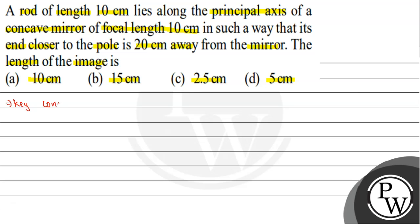The key concept used in this question: first, let's draw a concave mirror. Suppose we have a concave mirror — the outer side is polished. At this point we have the pole P, and along it we draw the principal axis. A rod is placed on the principal axis like this. We consider the end closer to the mirror as the first end.